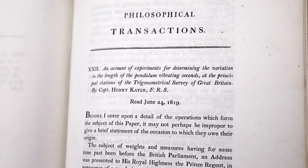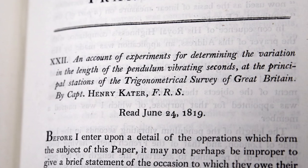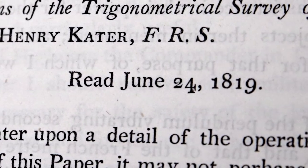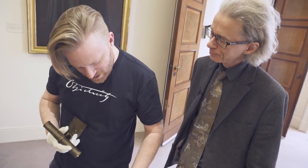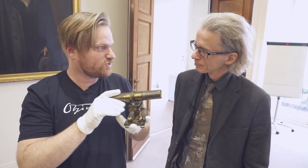We have this paper here called 'An Account of Experiments for Determining the Variation in Length of the Pendulum Vibrating Seconds at the Principal Stations of the Trigonometrical Survey of Great Britain,' from 1819. The paper starts off very much talking about weights, lengths, and measures, because a lot of this stuff to do with pendulums also relates to the yard — the standard yard. They wanted to have the precise measurement of the yard, and this is one of the ways they did it. But they had to begin by precisely measuring what a pendulum looked like, what the weight of it was, what the length of it was — they had to standardise that first.